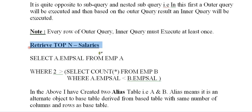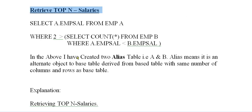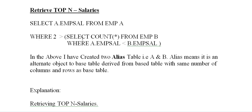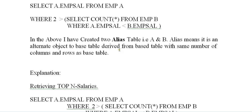Let's take an example of retrieving the top N salaries. I'm creating two aliases of the employee table — A and B. The query is: SELECT a.EMP_salary FROM EMP a WHERE 2 > (SELECT COUNT(*) FROM EMP b WHERE a.EMP_salary < b.EMP_salary). This finds the second max salary.